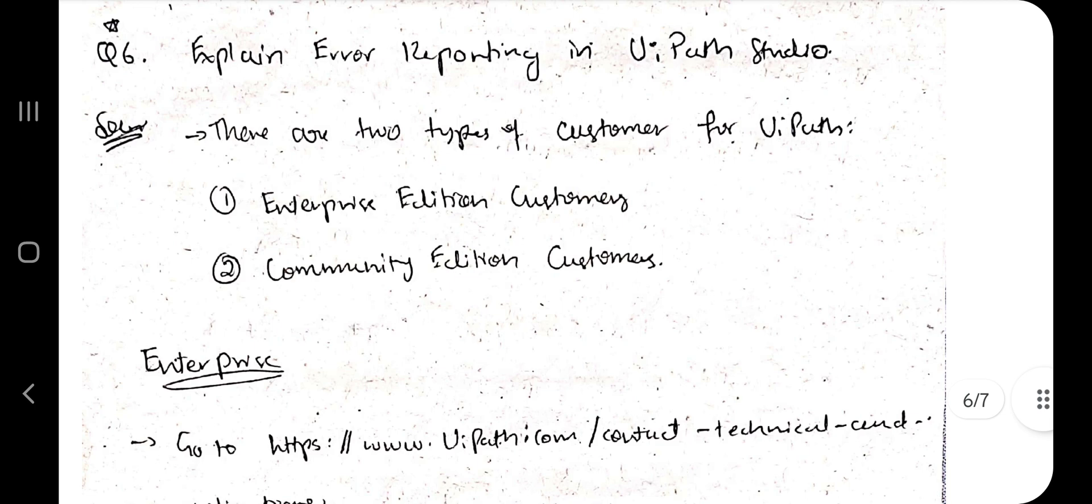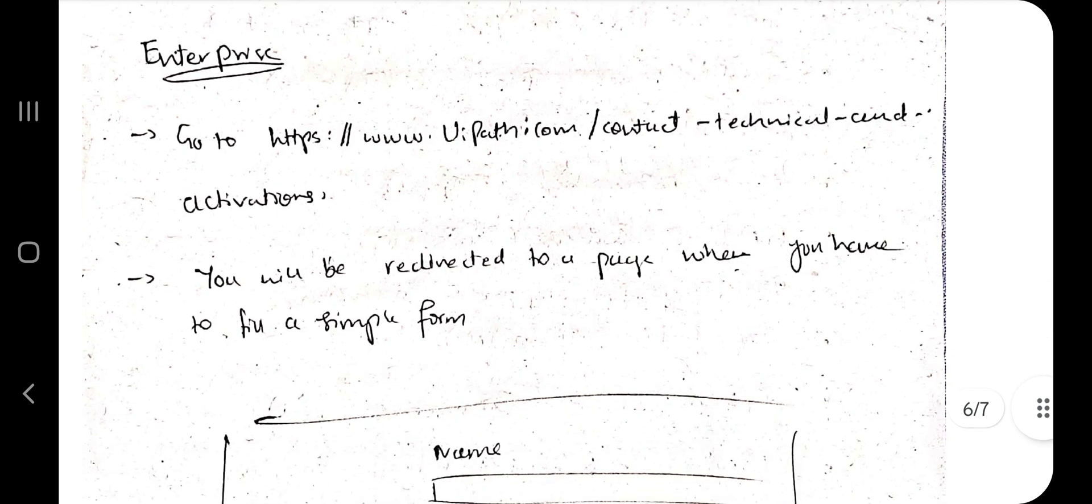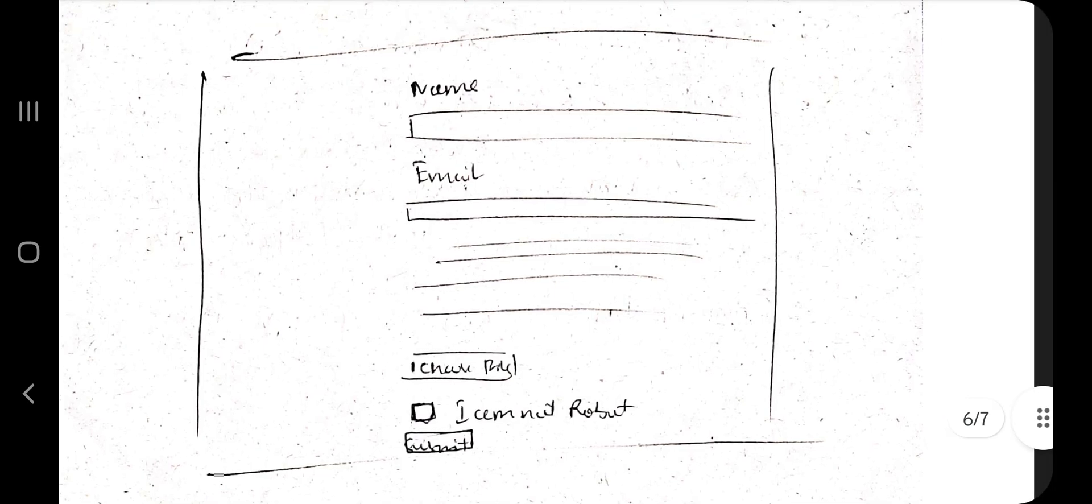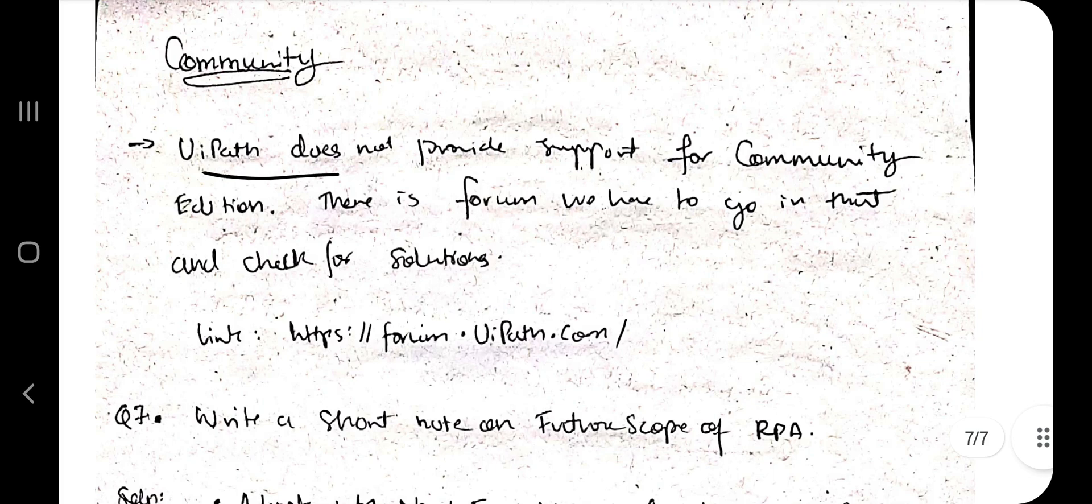Next one we have is error reporting. There are two types of users: enterprise and community. In the enterprise edition, the UiPath will give you a form where you can fill the information and tell what error you are getting. Whereas in the community edition, it's not the case. The UiPath does not provide any support for the community edition because we don't pay anything to UiPath. The last option is there's a forum where the users come together and discuss and solve each other's problems. This is the link if you want you can go through it.